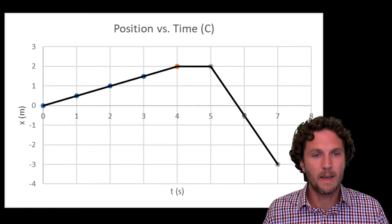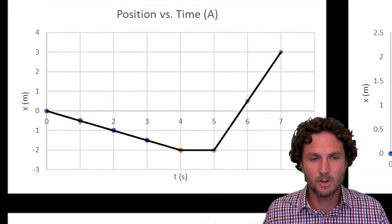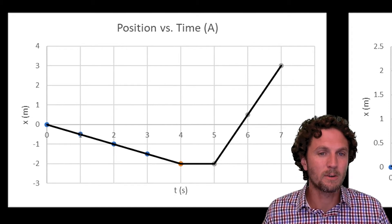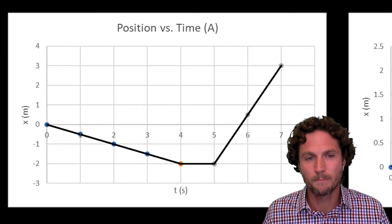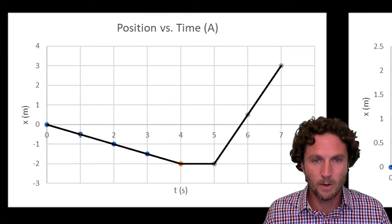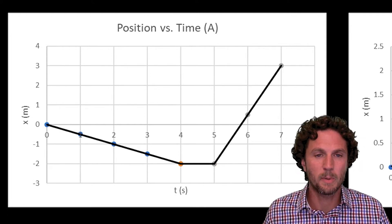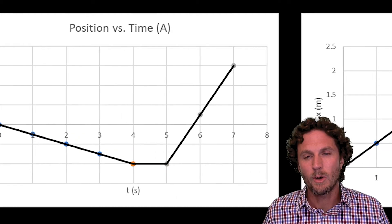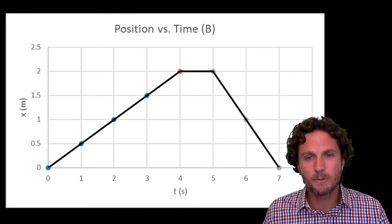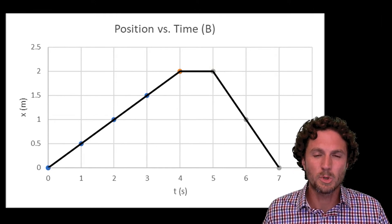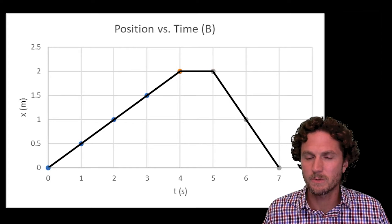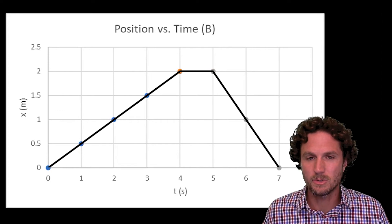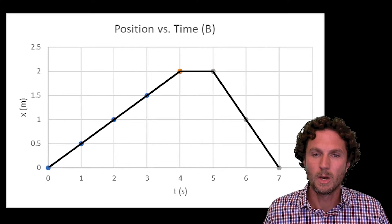Graph A has her starting at zero as well, but it shows a negative slope first, so it's actually the mirror of what really occurred — she didn't go left slowly, stop, and then go right faster; it was the opposite. If we look at graph B, the first four seconds shows a shallower slope indicating slower movement, but the problem is it shows her ending back at the zero position, meaning she would have had to stop back at the basketball hoop, which she clearly didn't.